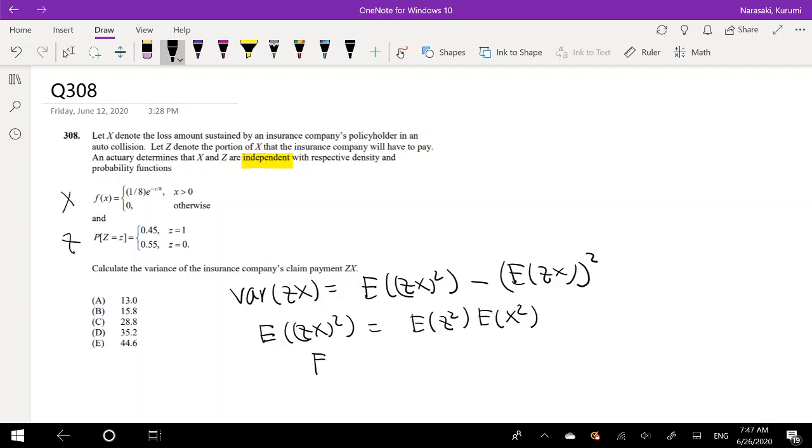So what is the second moment of Z²? This one's a little tricky, but actually it's not. This is just 1² times 0.45 plus 0² times 0.55, since this is a discrete distribution. This equals 0.45.